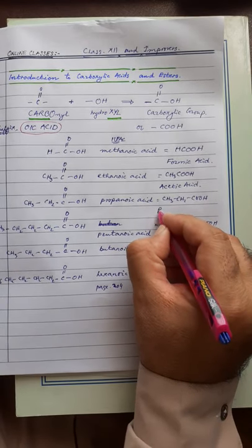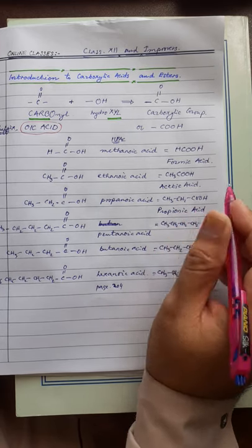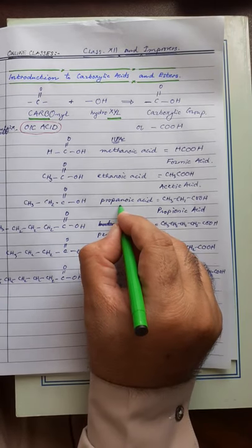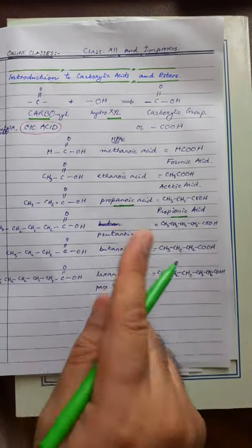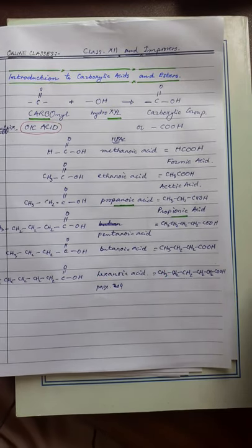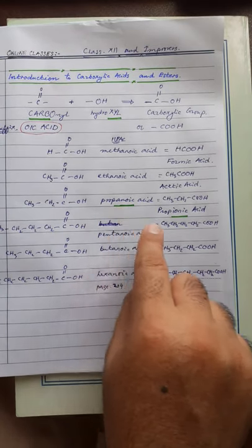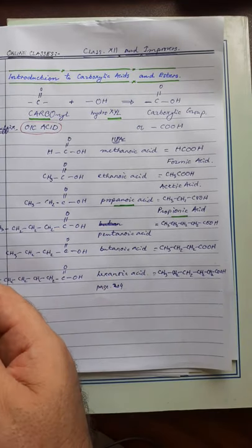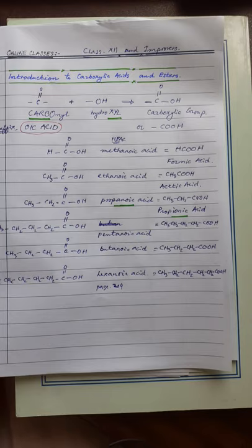Propanoic acid is commonly called propionic acid. Students can make a mistake here — propanoic is the IUPAC name, with 'propane' as the prefix for 3 carbons and 'oic acid' as the suffix. The word propionic is the common name, derived from 'protos' (first) and 'pion' (fats), because it was found in fats.